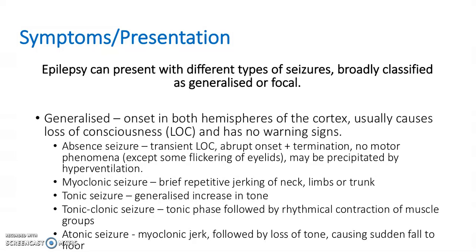A myoclonic seizure involves repetitive jerking, which can occur in the neck, limbs or trunk. A tonic seizure is a generalised increase in tone in all the muscles. A tonic-clonic seizure involves a tonic phase followed by the clonic phase, which is rhythmical contraction of the muscles. An atonic seizure involves a myoclonic jerk followed by a loss of tone, which can cause a sudden fall to the floor.